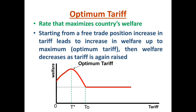When a country goes on imposing tariff even after the optimum tariff, welfare will decline. When it reaches T-zero, the tariff becomes prohibitive. Prohibitive tariff means it causes trade to be zero — there will not be any trade when the tariff rate is as high as a prohibitive tariff. So optimum tariff is defined as that tariff which maximizes the welfare of the country; after optimum tariff, welfare will decline.